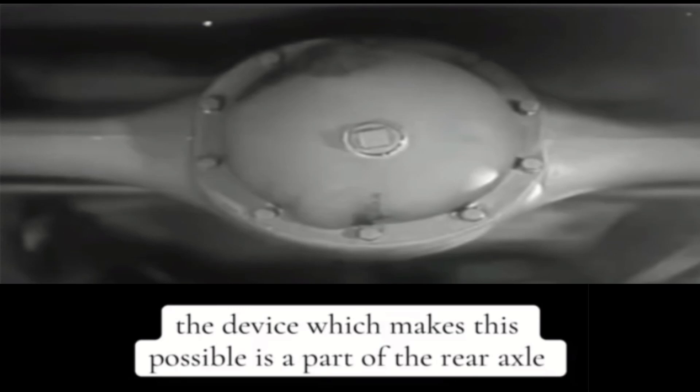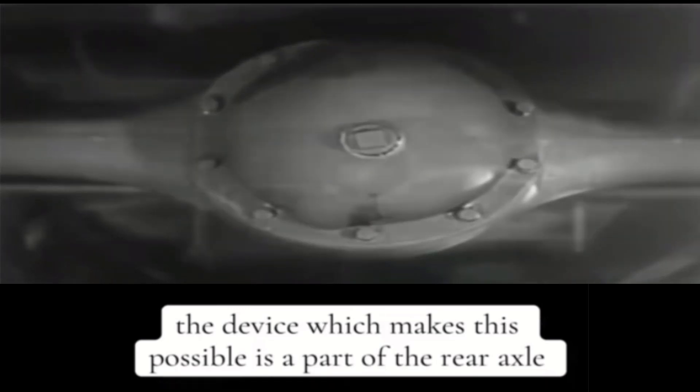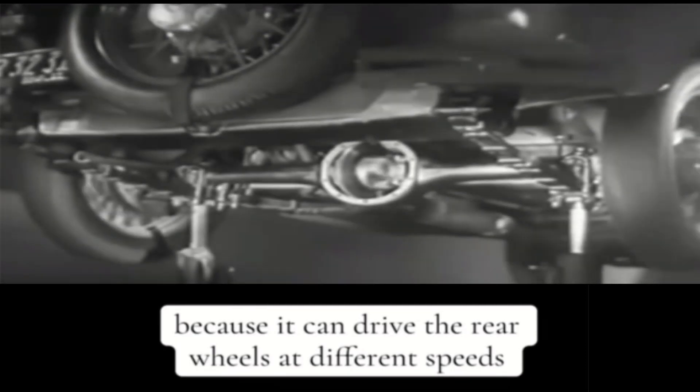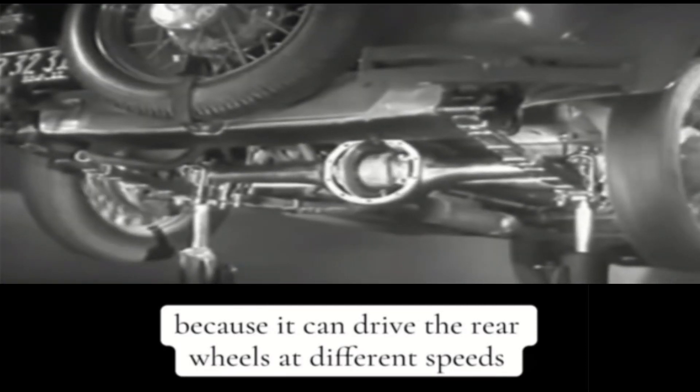The device which makes this possible is a part of the rear axle. It is called the differential because it can drive the rear wheels at different speeds.